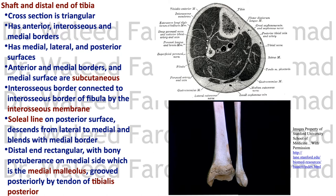The medial surface between the anterior and medial borders is subcutaneous. The interosseous border faces the interosseous border of the fibula and attaches the interosseous membrane. The soleal line on the back of the proximal end of tibia descends from lateral to medial and blends with the medial border of the tibia.